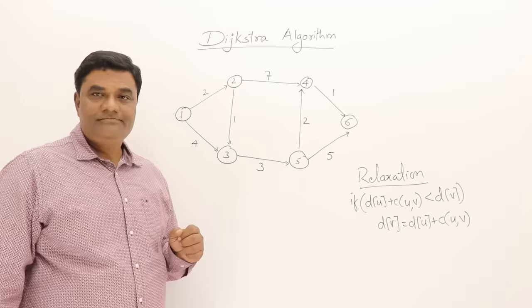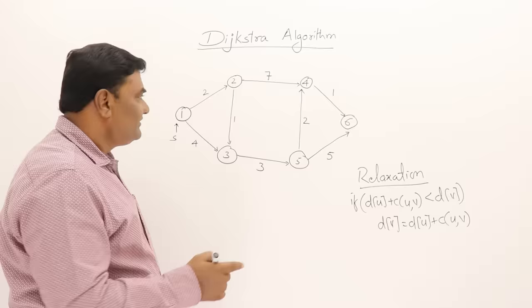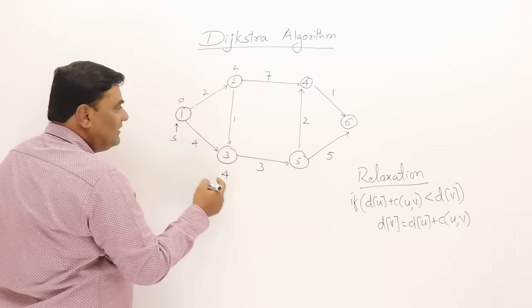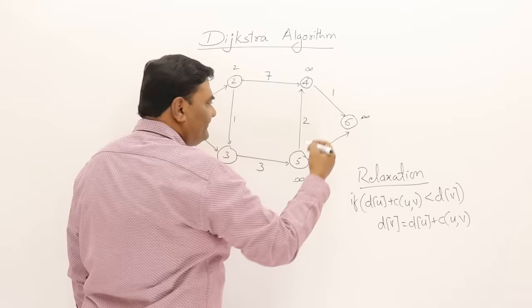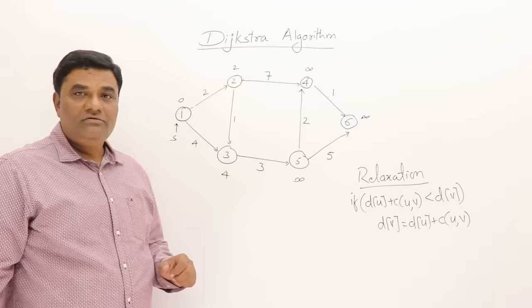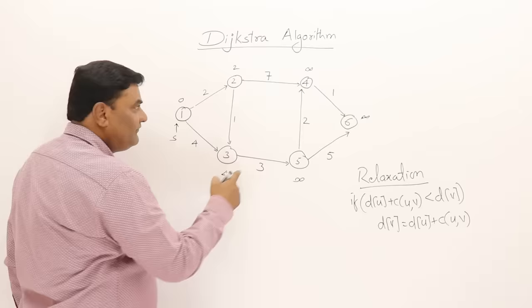Now let us follow this procedure and solve the graph problem to find the shortest path. I will select this vertex as the source vertex, vertex 1. I will give the distances for all vertices by considering just single edge paths. So the distance is 0 for vertex 1, 2 for vertex 2, 4 for vertex 3. From 1 to 4 there is no direct edge, so infinity. From 1 to 5, no direct edge, infinity. Similarly 6 is also infinity. Except 2 and 3, all are infinity. This is the initial setup for any graph.